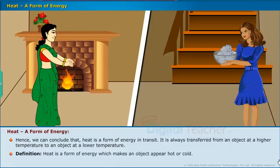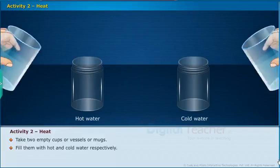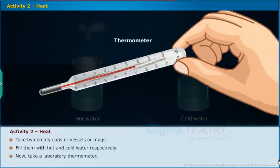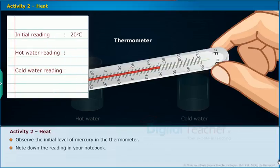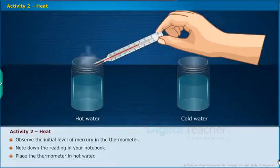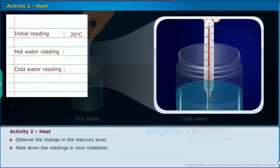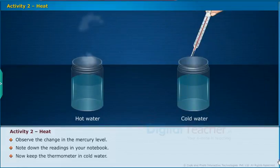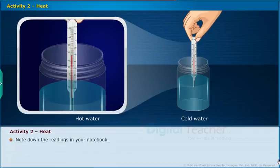Definition: Heat is a form of energy which makes an object appear hot or cold. Take two empty cups or vessels and fill them with hot and cold water respectively. Take a laboratory thermometer and observe the initial level of mercury. Note down the reading in your notebook. Place the thermometer in hot water and observe the change in the mercury level. Note down the readings. Now keep the thermometer in cold water, observe the change in mercury level, and note down the readings.